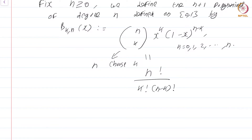We have now defined these polynomials, but I said defined on 0,1. Why do I say defined on 0,1? Because if you remember your basic probability, what this actually measures is the following.